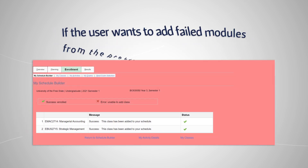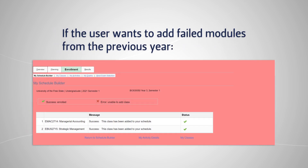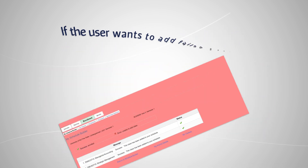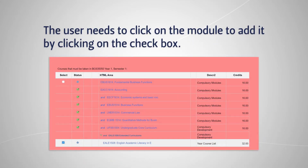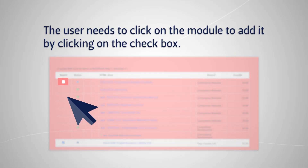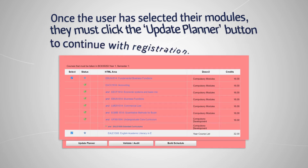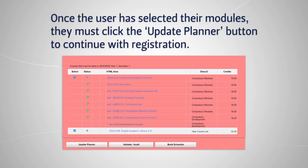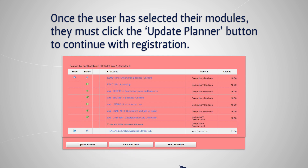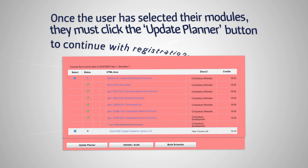If the user wants to add failed modules from the previous year, the user needs to click on the module to add it by clicking on the checkbox. Once the user has selected their modules, they must click the Update Planner button to continue with registration.